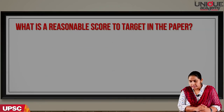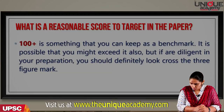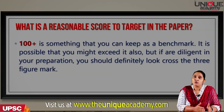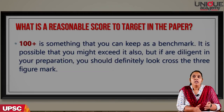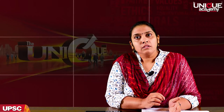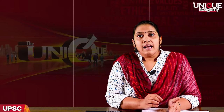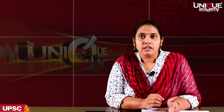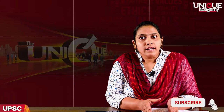What is a reasonable score to target in this paper? I'm going to say 100 plus is a very reasonable score. It is possible you might exceed it — successful candidates and toppers have scored much more, even up to 140, which seems almost unlikely in any other GS paper. In GS 1, 2, or 3 it is almost impossible to score 140, but ethics gives you that space. You need diligent preparation, you need to plan it well, know your syllabus well, and treat ethics as a complete domain of study — not something you can do on the side. UPSC has looked at it as an interdisciplinary domain of knowledge, and with good planning, crossing 100 should be a reasonable target.